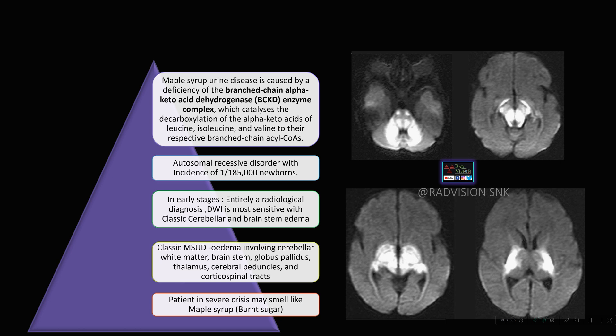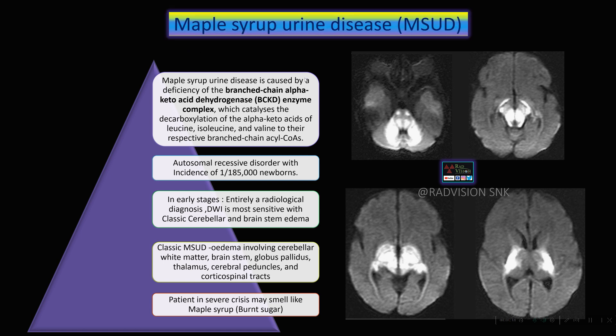In late cases, you have restricted diffusion extending into the brainstem, globus pallidi, thalamus, and corticospinal tracts. The patients will have a typical sweet smell of the urine — maple syrup or burnt sugar urine smell. So remember maple syrup urine disease.